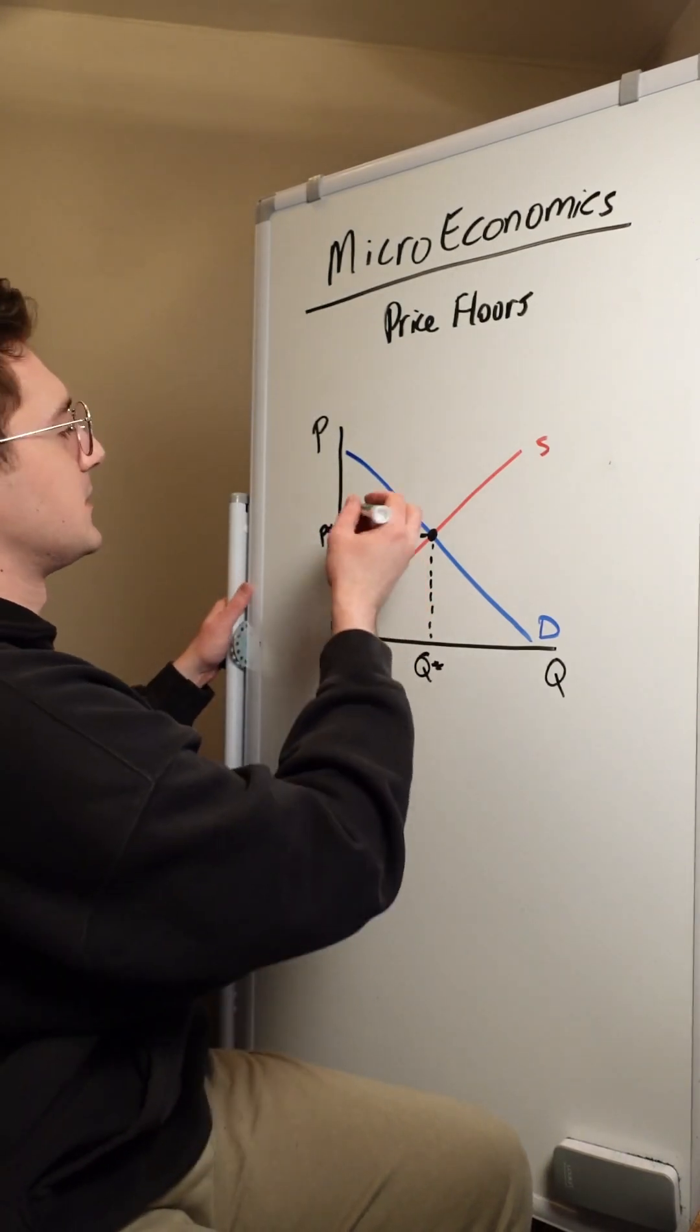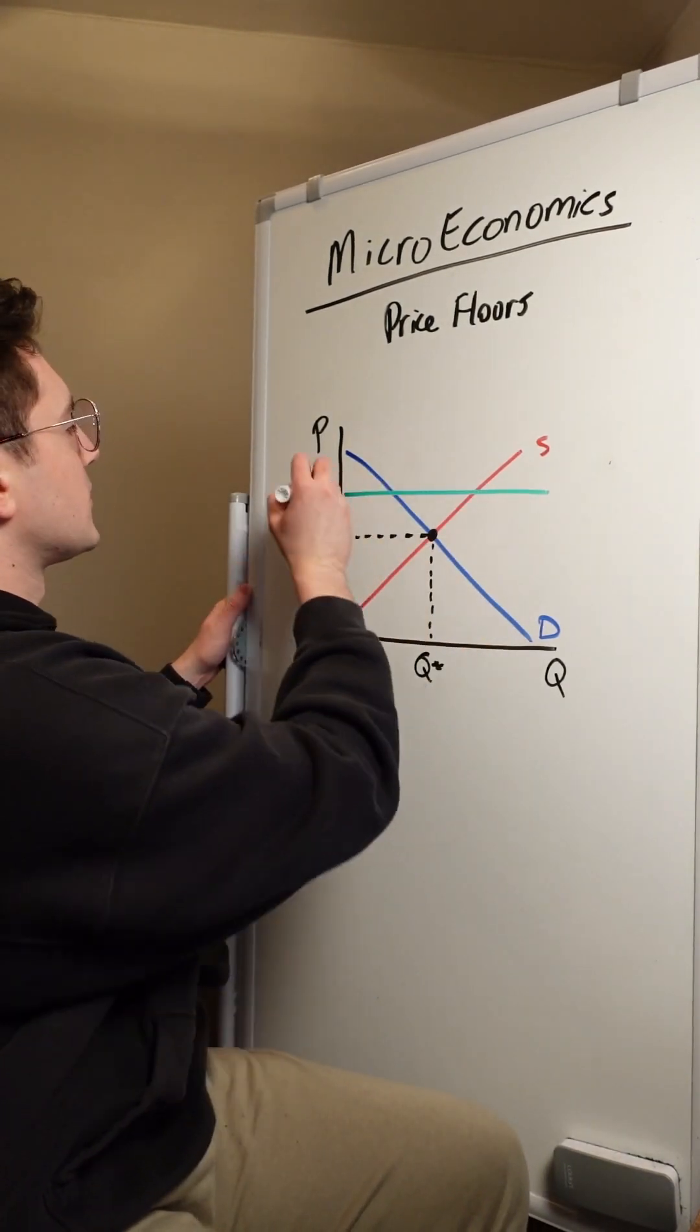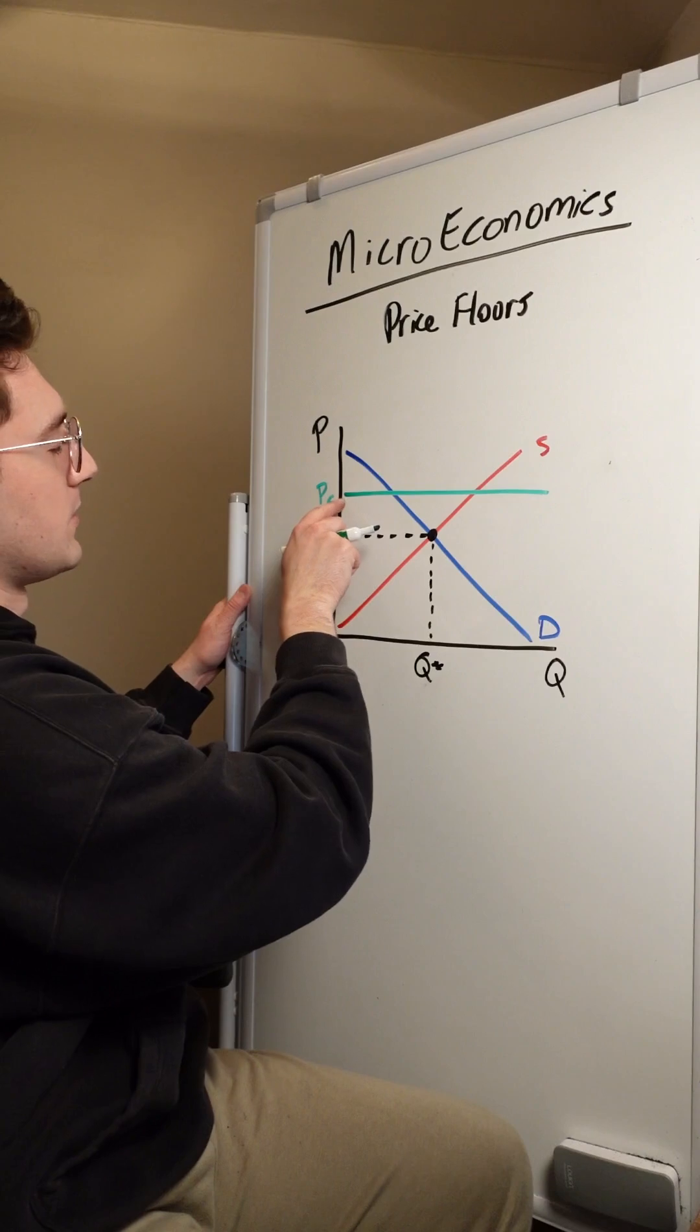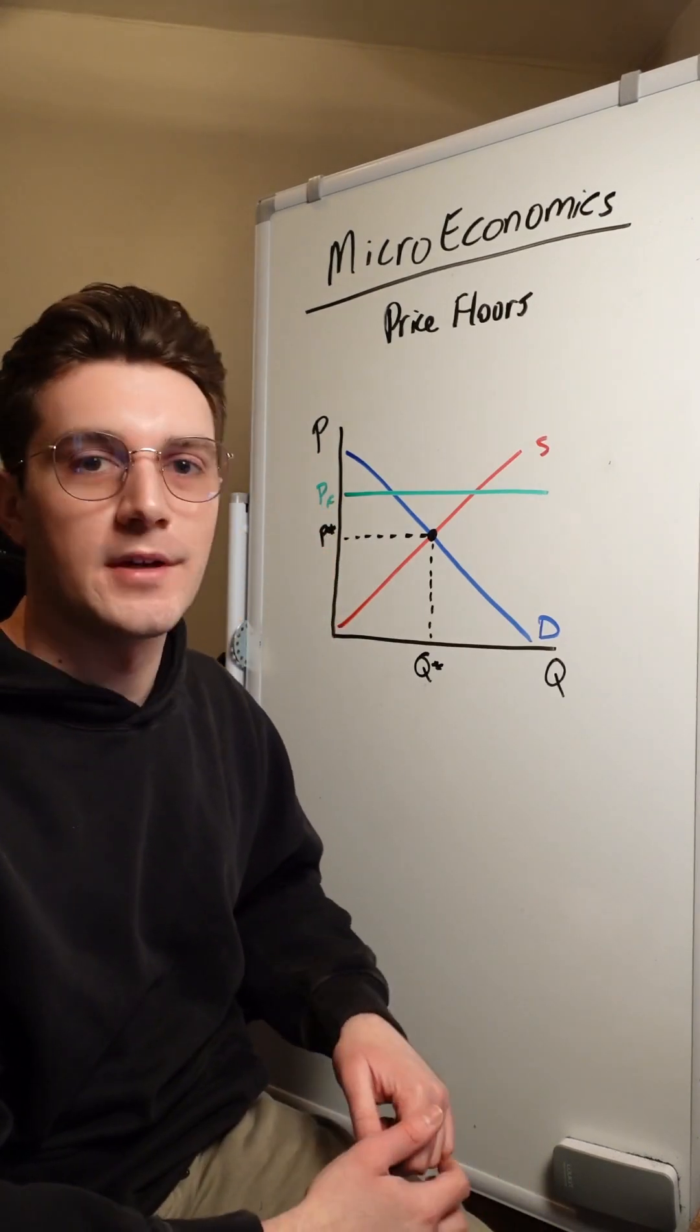So let's imagine this market, the government comes in and says, you can no longer sell below this price floor right here. It's our new minimum price that you can sell the good at.